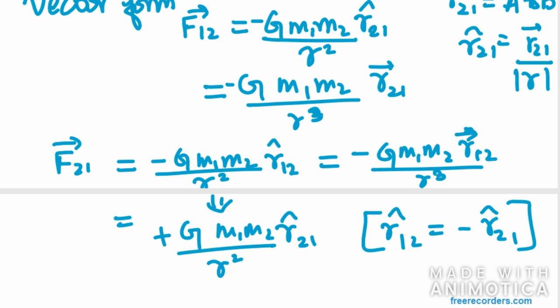Now it is very much clear that F12 vector is equal to minus of F21 vector quantity. That represents Newton's third law of motion.